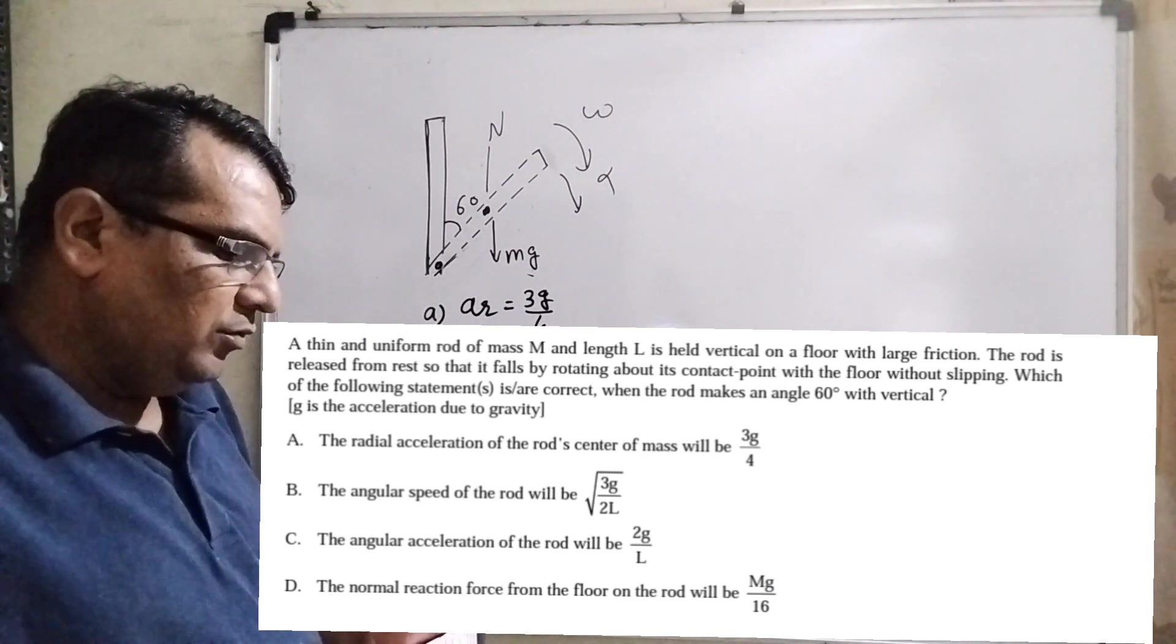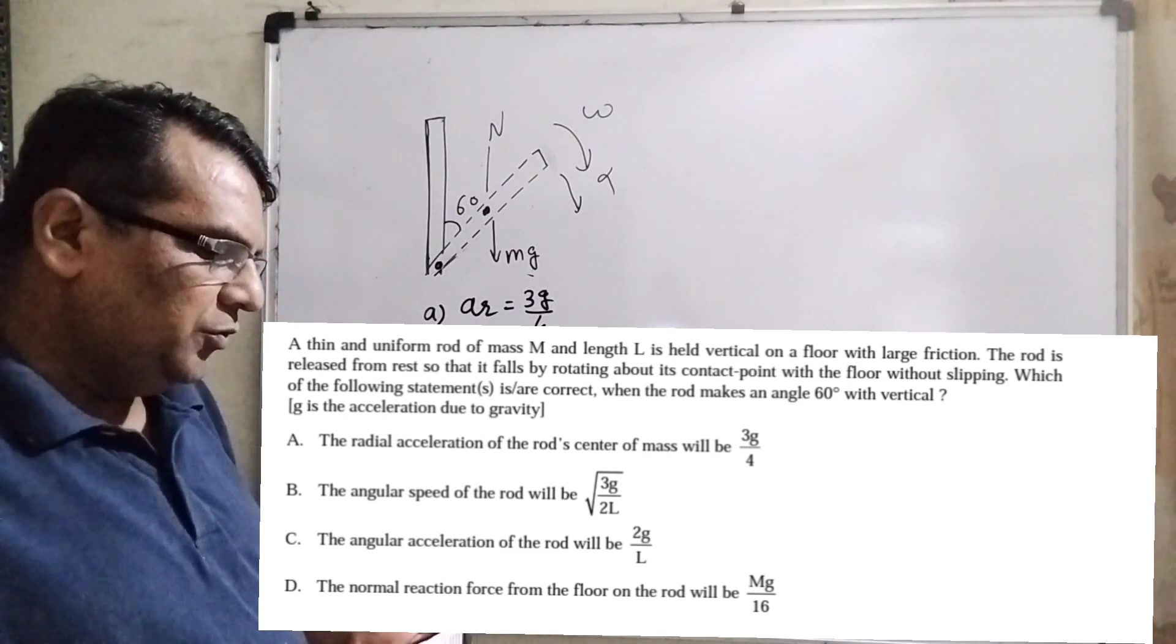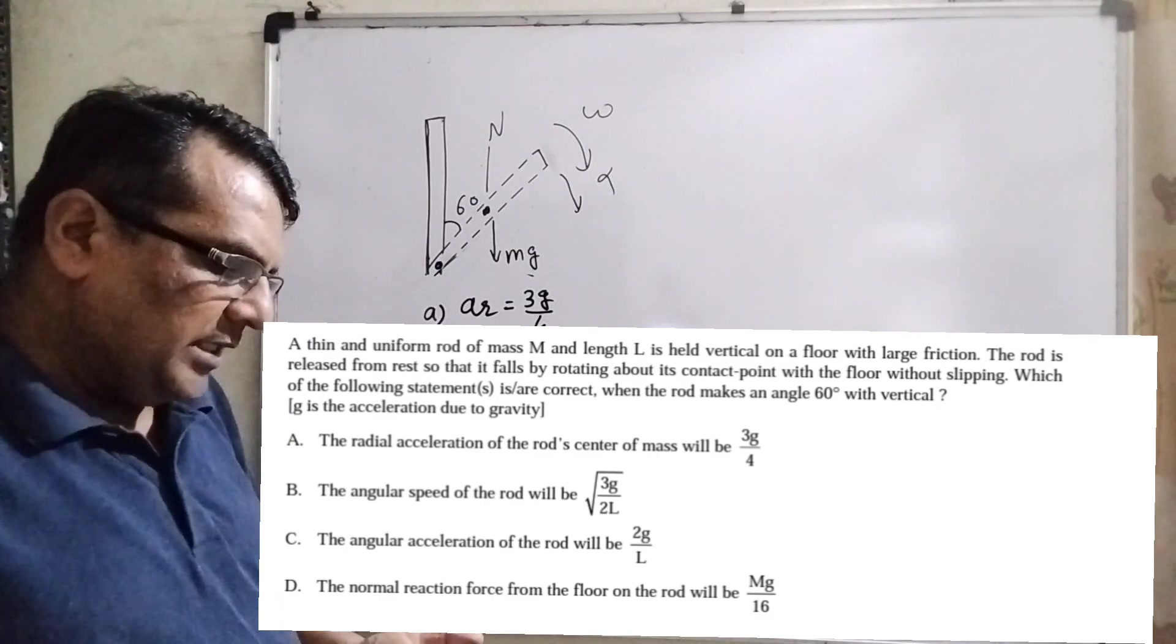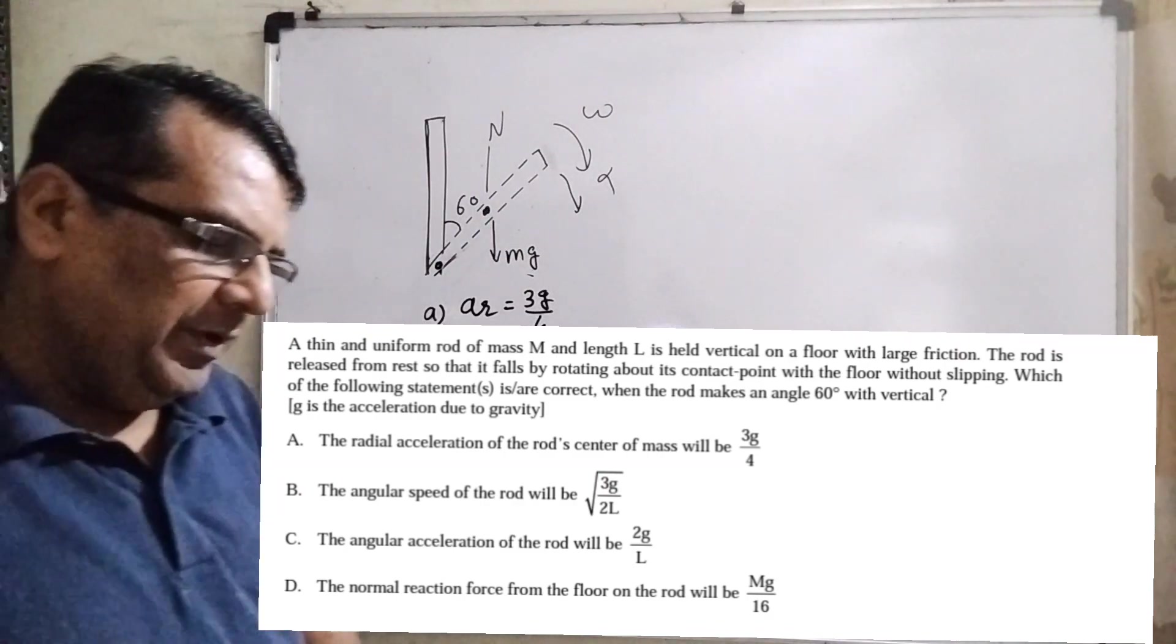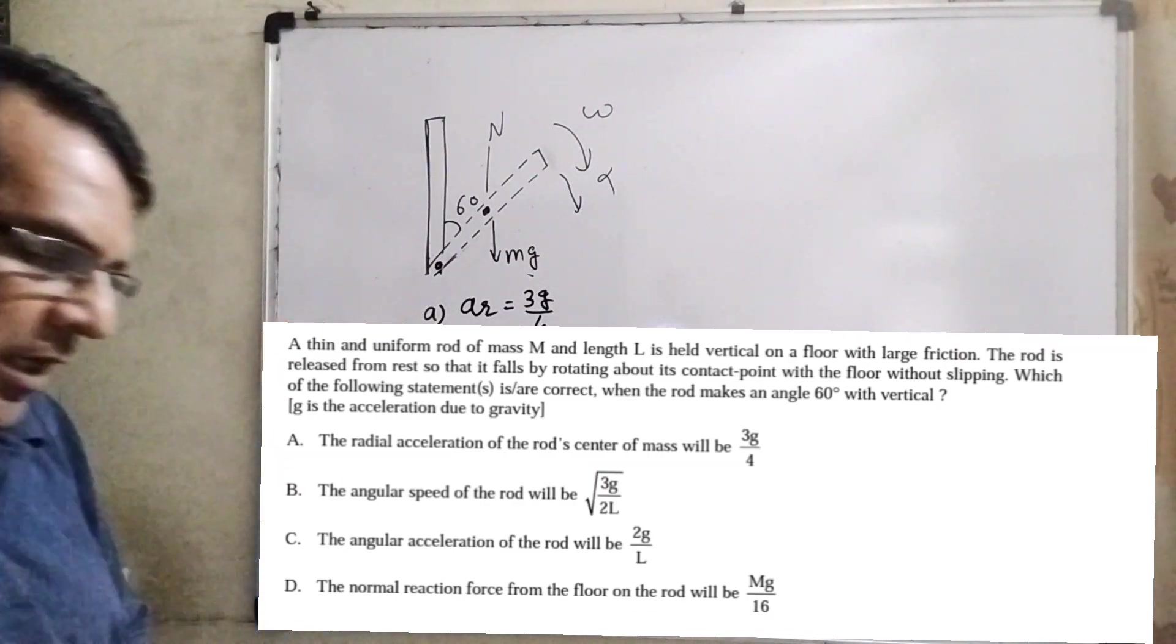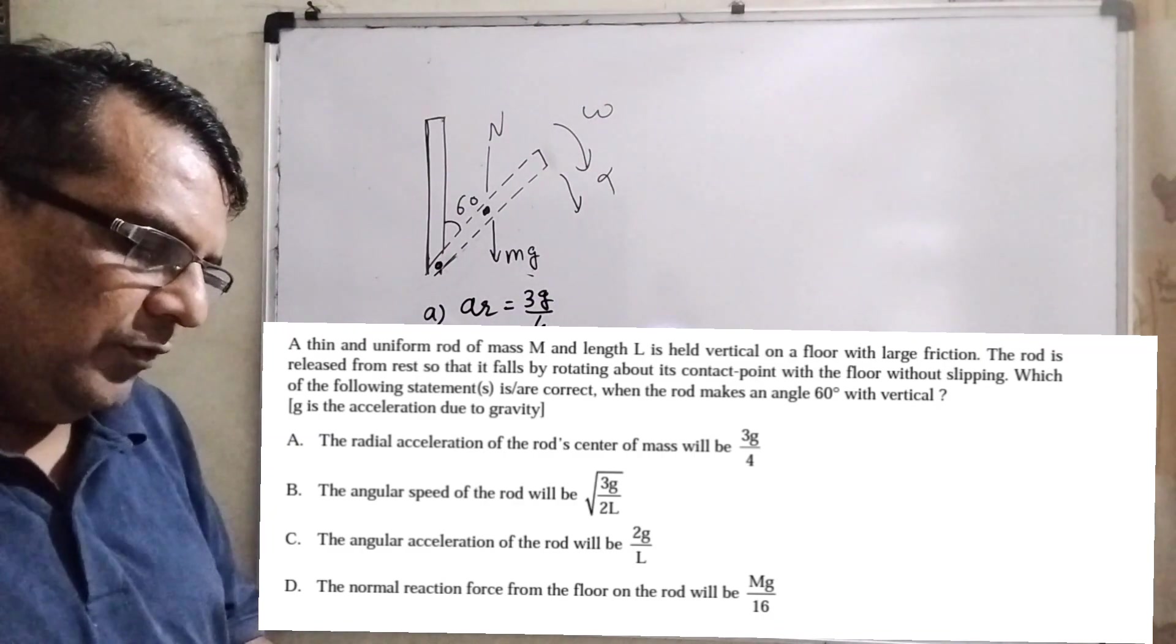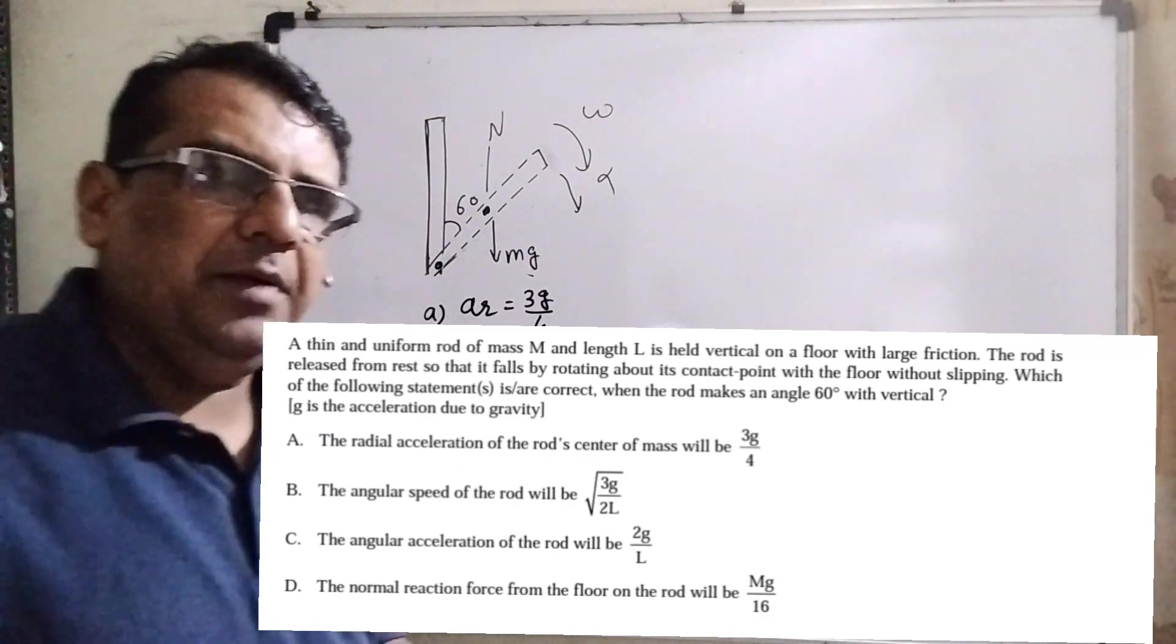Option B: the angular speed of the rod will be root 3g by 2L. Option C: the angular acceleration of the rod will be 2g by L. And option D: the normal reaction force of the floor on the rod will be 10g by 16.